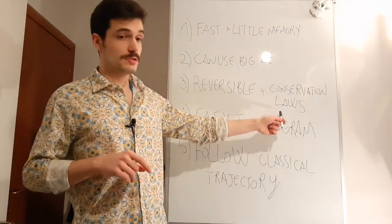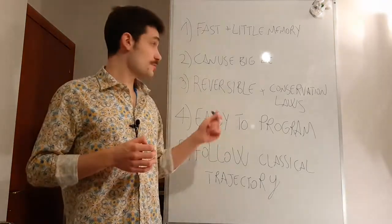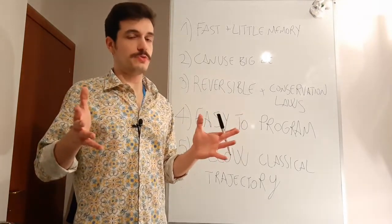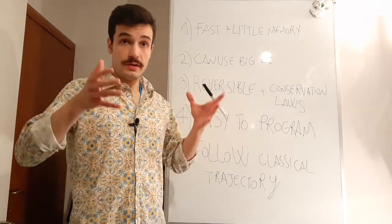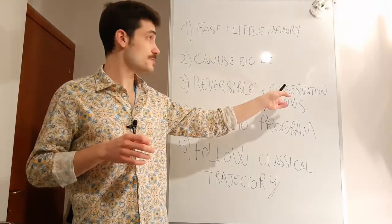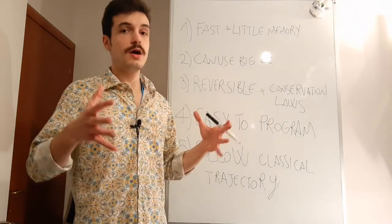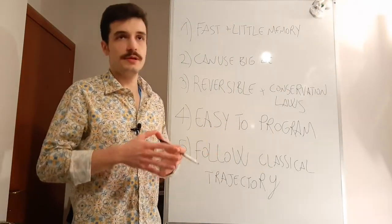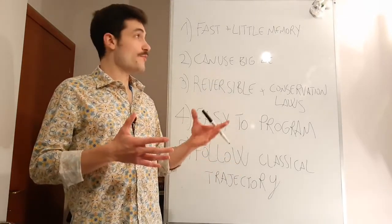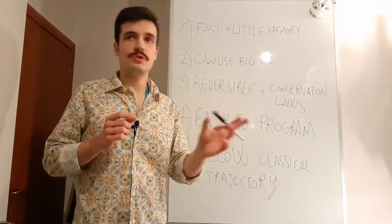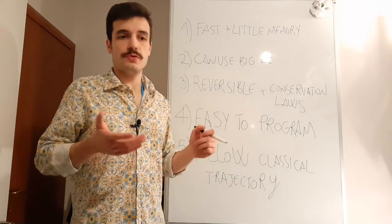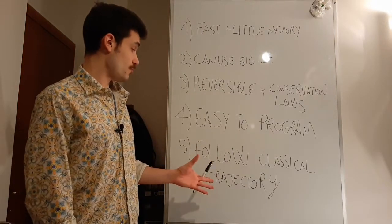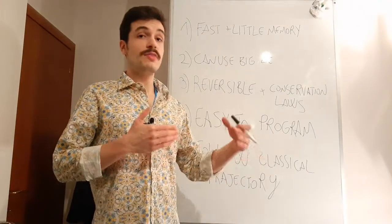The algorithm must respect the conservation laws. If we expect to conserve energy, the algorithm should conserve energy at least well enough. If we are supposed to conserve linear momentum — which is usually what's expected in molecular dynamics — we want it conserved well enough. It won't be possible to conserve it 100% because we are not using infinitesimal time steps, but we want to be as close as possible. It must also be easy to program; it makes no sense to use an incredibly complex algorithm when simpler ones exist, especially if it would take months to program and is full of bugs.